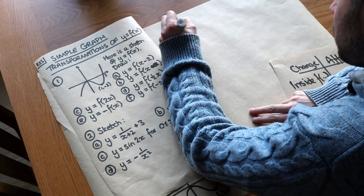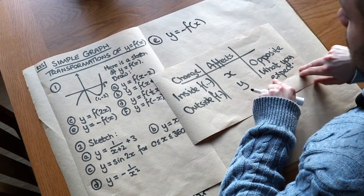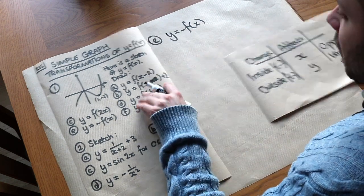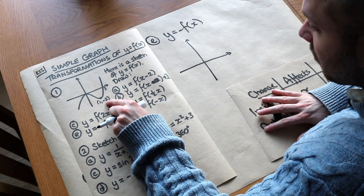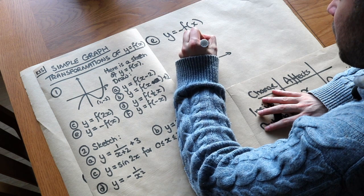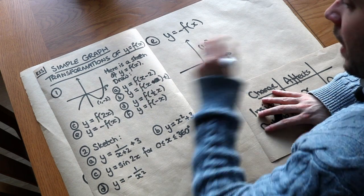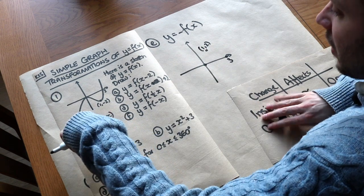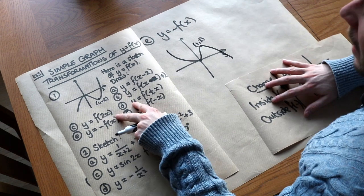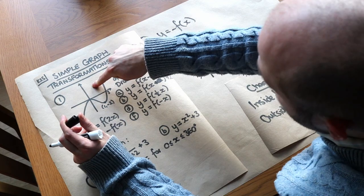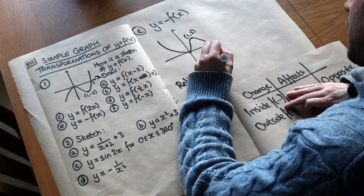For part e, y equals minus f of x. That minus is outside the function, so it's going to affect the y values and does what we expect — we negate the y values, i.e. multiply them by minus 1. The minimum point (1, −2) has its y value negated to become (1, 2) — note the x value has not changed. The point (3, 0) stays as it is, and (0, 0) stays the same. The graph has been flipped upside down because each y value has been negated to the other side of the x-axis. This is a reflection in the x-axis.